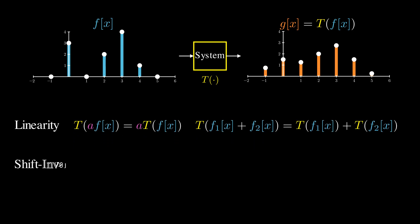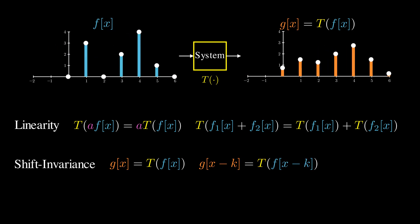The second property is shift invariance. This means that shifting the input signal causes the corresponding shift in the output signal, without changing shape.